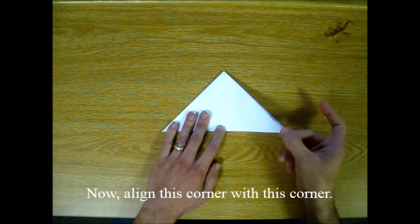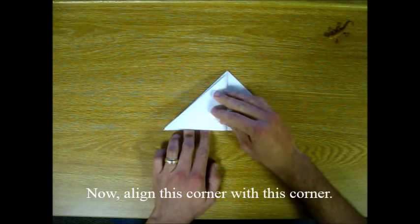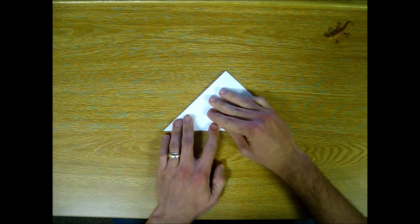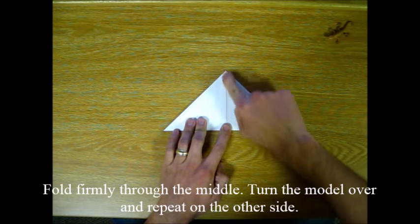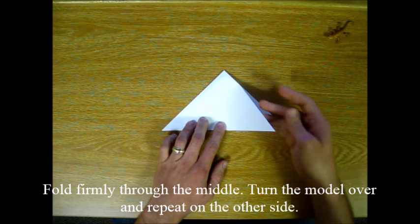Now align this corner with this corner. Then fold firmly through the middle. Turn the model over and repeat on the other side.